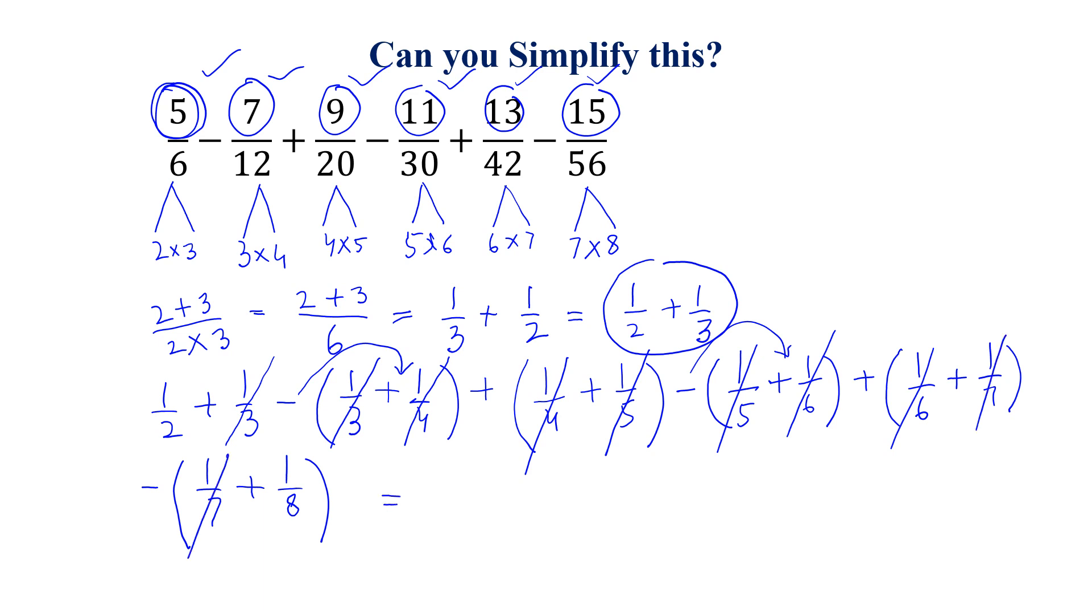so we will get 1 over 2 minus 1 over 8, and we can write this as if we multiply and divide by 4, we get 4 by 8 minus 1 by 8, and this is equal to 3 by 8, and this is the answer of this expression.